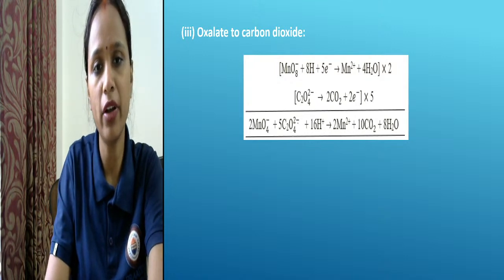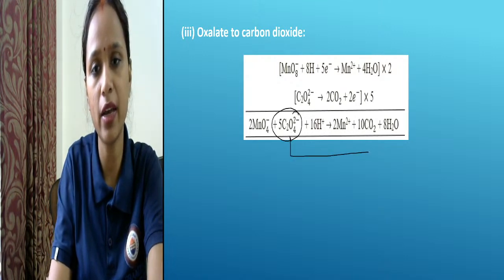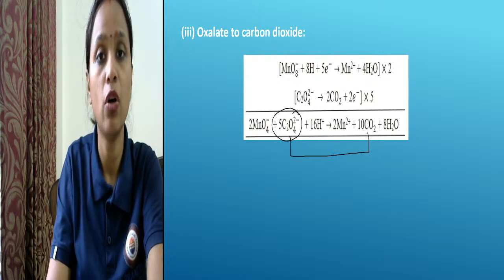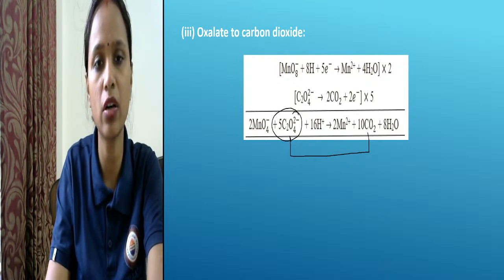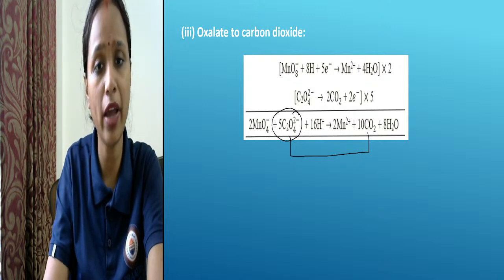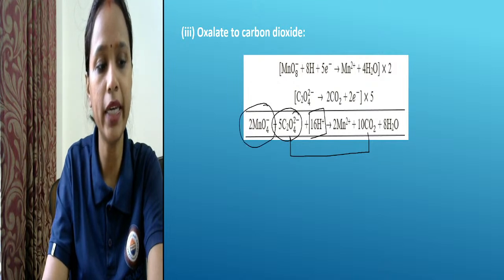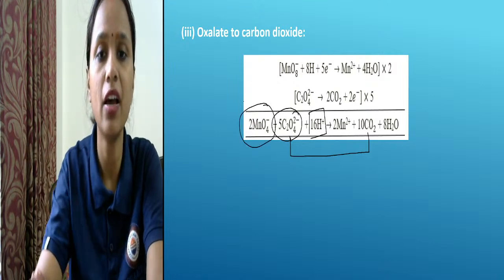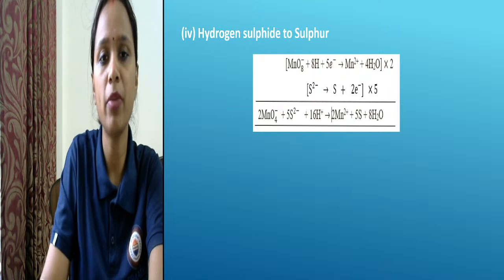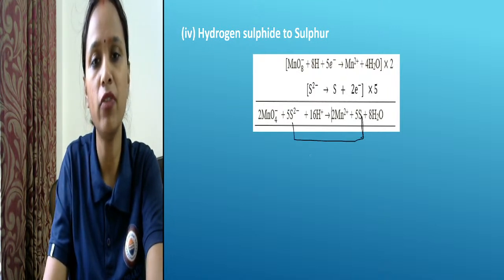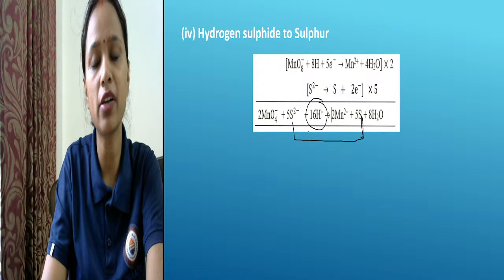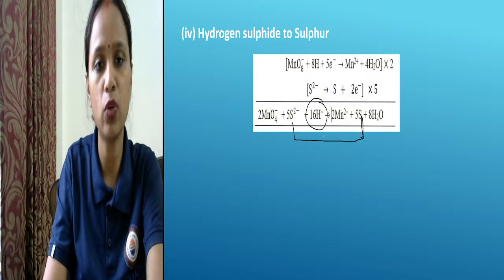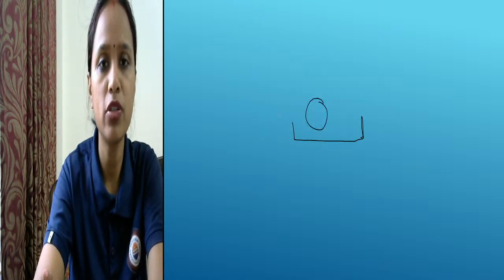Oxalate is oxidized to carbon dioxide in acidic medium, where potassium permanganate is the oxidizing agent. Then, hydrogen sulfide is converted into sulfur in acidic medium using potassium permanganate — almost the same reaction as before.